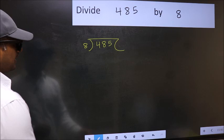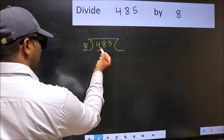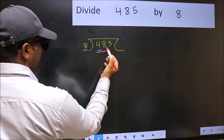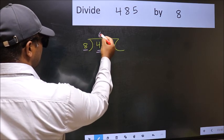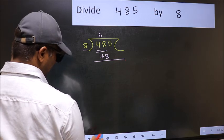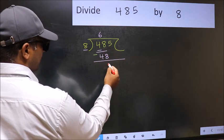Next, here we have 4 and here 8. 4 is smaller than 8, so we should take two numbers, 48. When do we get 48 in 8 table? 8, 6, 48. Now you should subtract. 48 minus 48, 0.